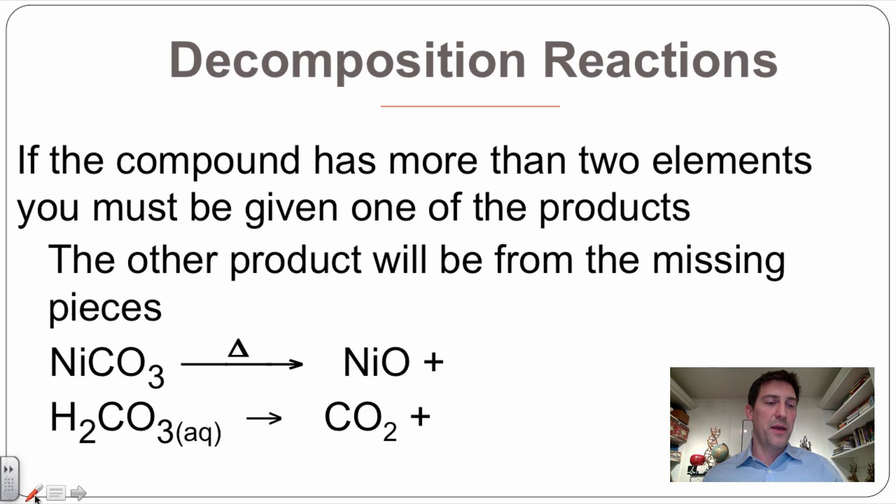So if we grab a pen down here and we look, we've got nickel carbonate is reacting to form nickel oxide. What do we have left? We have CO₂. So I've chosen simple ones here, obviously, that will balance themselves out. In fact, that's already balanced.